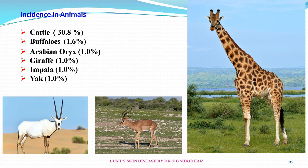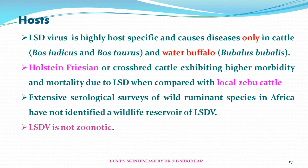LSD is highly host-specific and causes disease mainly in cattle, especially Bos indicus and Bos taurus — both are affected, whereas Bos taurus cattle are more susceptible. Water buffalo (Bubalus bubalis) is also affected. Frisian or crossbred cattle exhibit higher morbidity and mortality due to LSD compared with local Zebu cattle. Extensive serological surveys of wild ruminants in Africa have not identified a wildlife reservoir for LSDV.